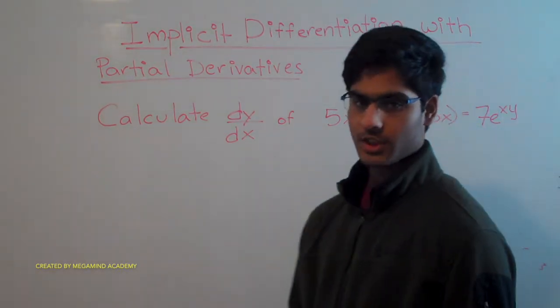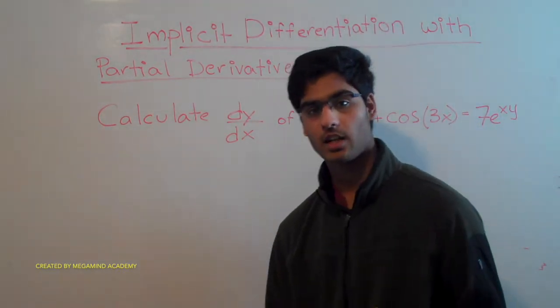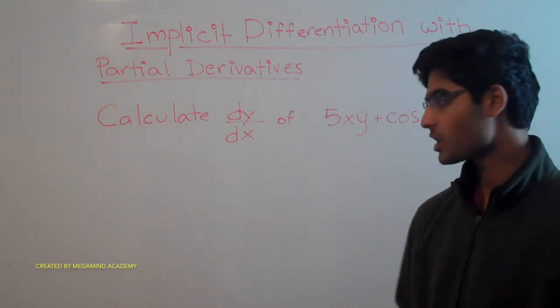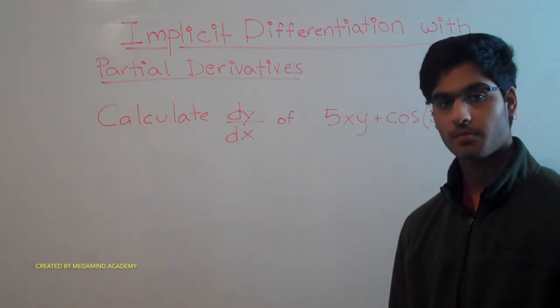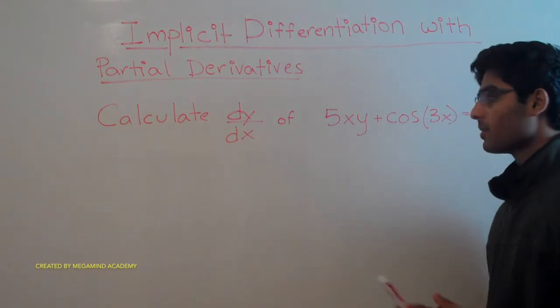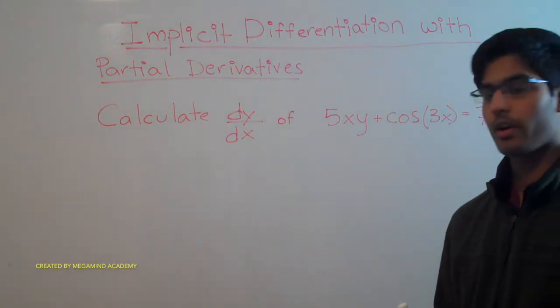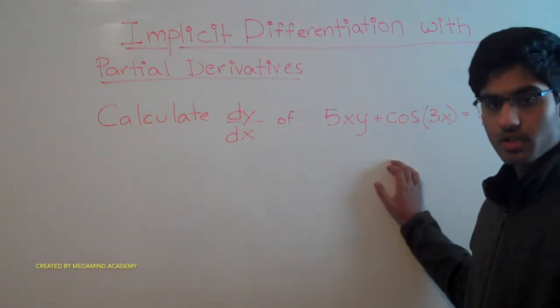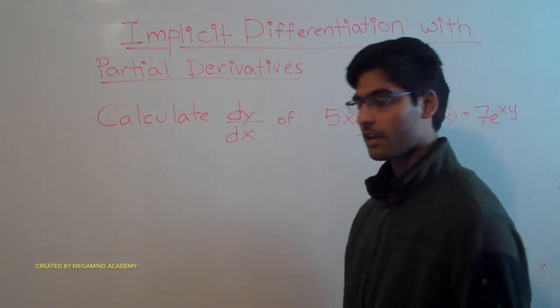So with the normal way of implicit differentiation that we learned in Calc 1, this would require a lot of algebra after we do the calculus. But now that we know partial derivatives, there's a simpler way of doing this. So before we answer the problem, let's first figure out how to do this.